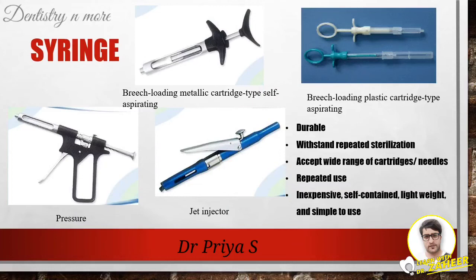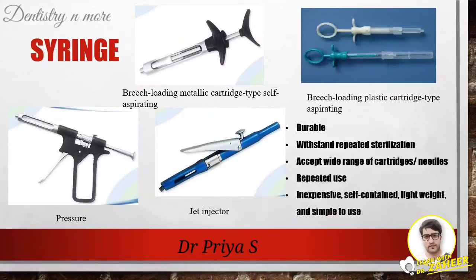The first equipment is the syringe. The syringe is the vehicle whereby the contents of the anesthetic cartridge are delivered through the needle to the patient. Syringe types available in the industry can be classified into non-disposable syringes, disposable syringes, safety syringes, and computer-controlled local anesthetic delivery systems. In the non-disposable category, you have breech-loading metallic cartridge type aspirating syringes.